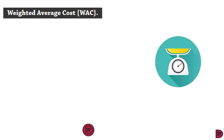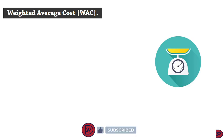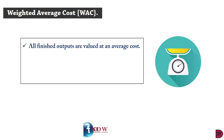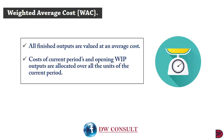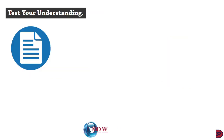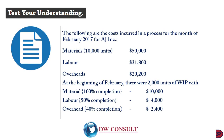We now move to the second approach — the weighted average cost method. Here, all finished goods are valued at an average cost. The cost of both the opening work in progress and that of the current period are allocated over all units worked in the current period.